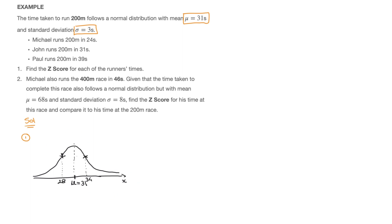Next, I'll add on the bell curve the times for each runner. Michael ran it in 24 seconds, so 24 is somewhere down here on the x-axis. John ran it in 31 seconds — that's equal to the mean, so it's right at the center. And Paul ran 200 meters in 39 seconds, so 39 is somewhere over to the right. That's all the given information illustrated on a bell curve.